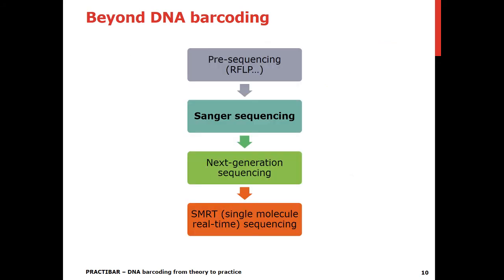Moving on to technological advances: for those familiar with different molecular methods, you probably remember when RFLP — restriction fragment length polymorphism — was used for diagnostic purposes. Then Sanger sequencing became popular and DNA sequences were used, and are still used, for diagnostics. We are still in the Sanger sequencing era for this training, though technology is constantly changing.